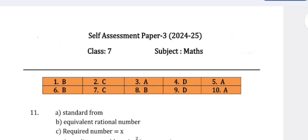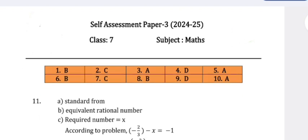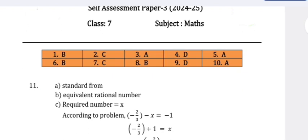Here are the answers to the self-assessment paper 3, 2024-25, Class 7. Question 1: B, Question 2: C, Question 3: A, Question 4: D, Question 5: A, Question 6: B, Question 7: C, Question 8: B, Question 9: D, Question 10: A.